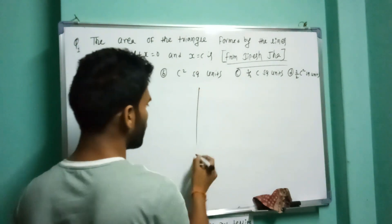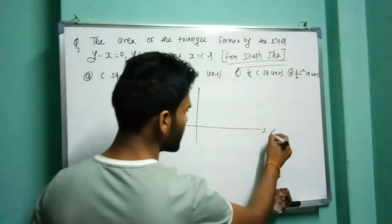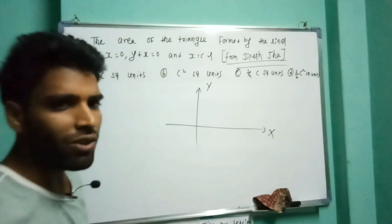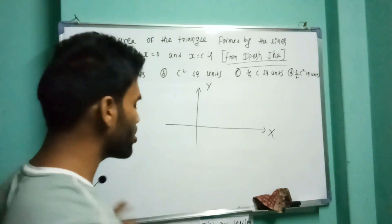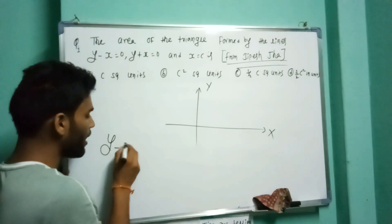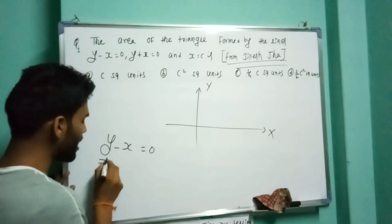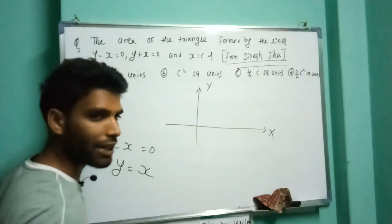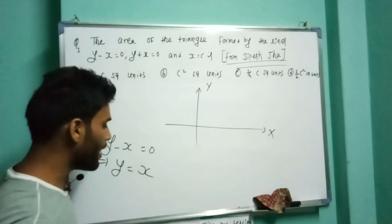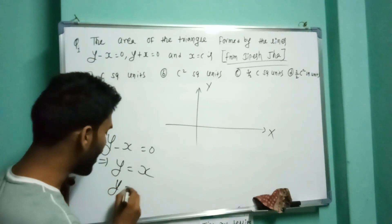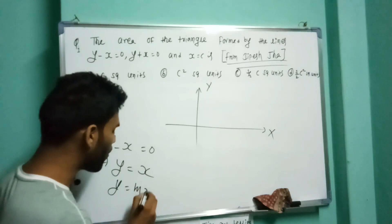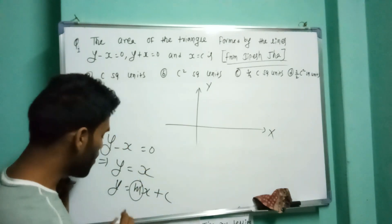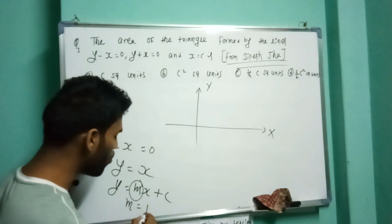So we are going to analyze the lines. y minus x equals 0, and y plus x equals 0. If y equals mx plus c is a line, comparing y minus x = 0, the slope m equals 1 and the point gives us slope 1.